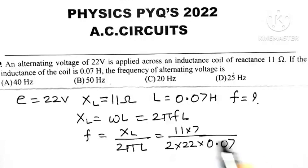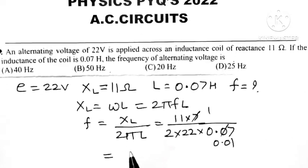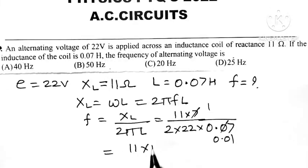0.07 divided by 7 gives 0.01. Since 0.01 equals 10 raised to minus 2, when in the denominator it becomes 10 raised to 2. So we have 11 times 10 raised to power 2.